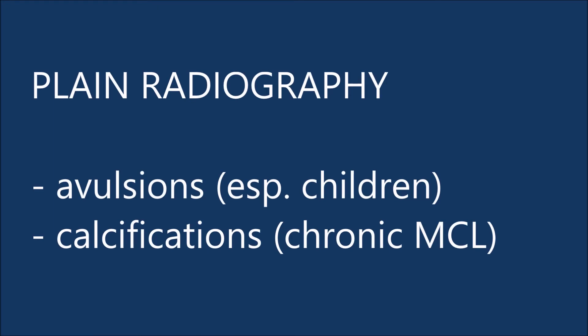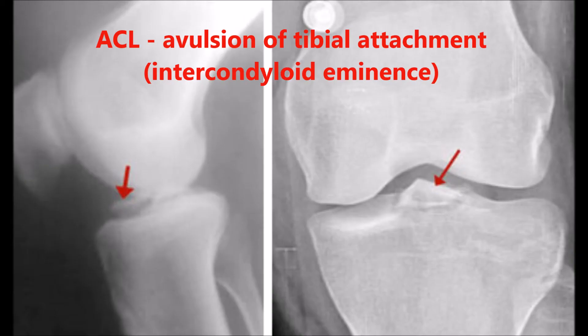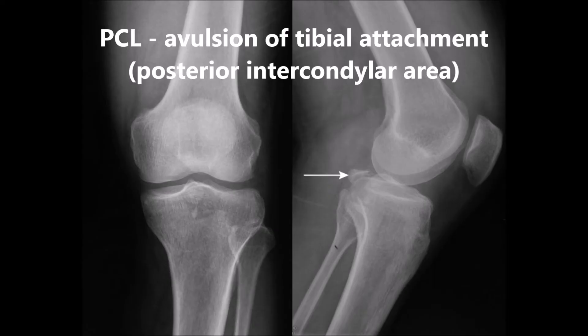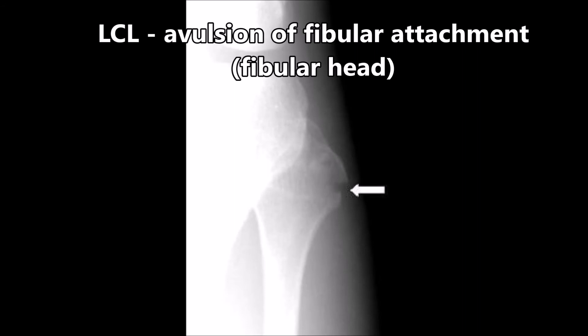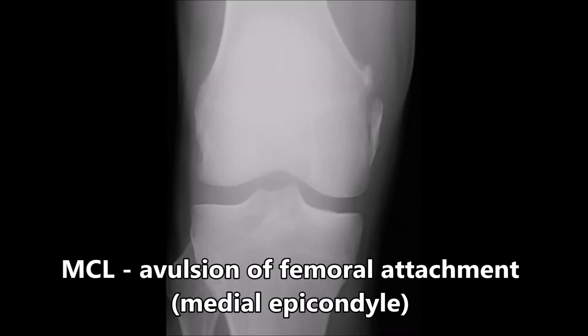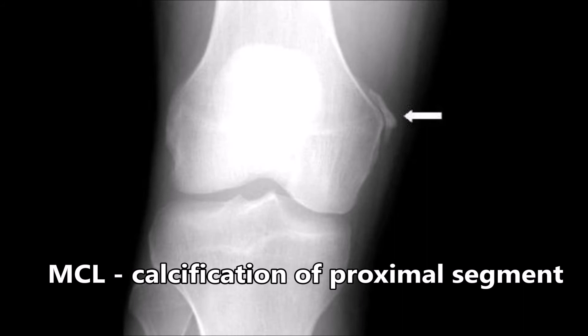As with most clinical cases, investigations can assist in making a diagnosis. Starting with the plain radiograph — these are generally not so useful. However, especially in children, you may see avulsions where the ligaments attach or calcifications if there has been chronic injury. Here is an example of an ACL injury which has caused avulsion at the intercondyloid eminence. A PCL injury with avulsion at the posterior intercondylar area, and LCL avulsion of the fibular attachment at the fibular head. Avulsion at the medial epicondyle of the femur can also be seen with the MCL attached, as well as calcification due to long-standing chronic inflammation and injury of the MCL.